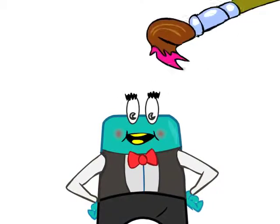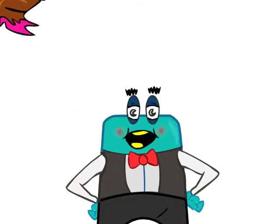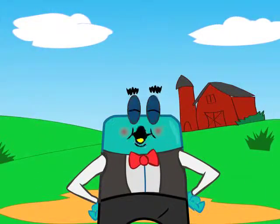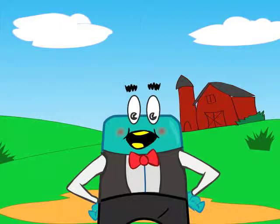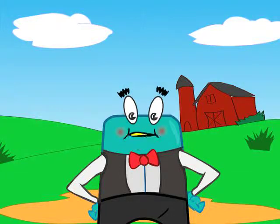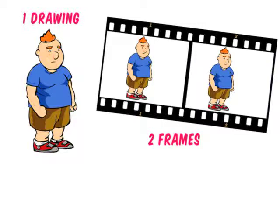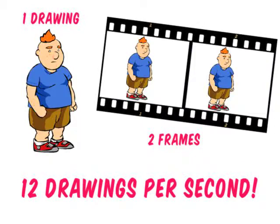I guess it's time to talk about cartoons then. In cartoons, moving characters are often shot on twos — that is to say, one drawing is shown for every two frames of film, meaning there are only 12 drawings per second.